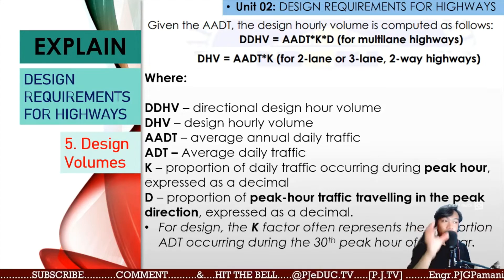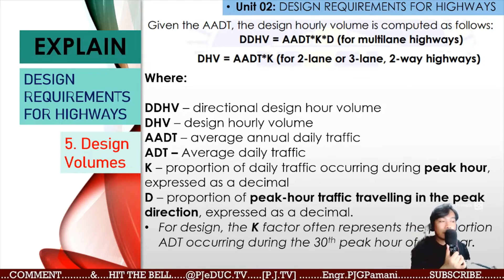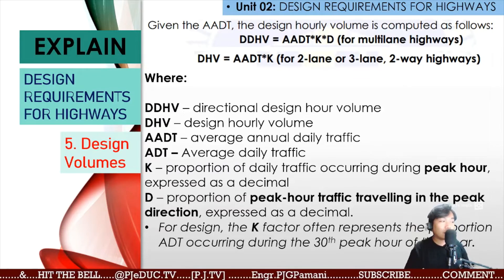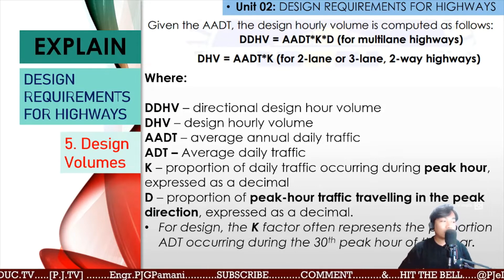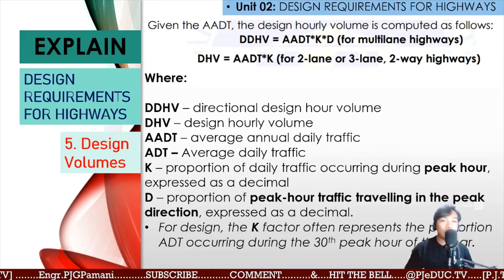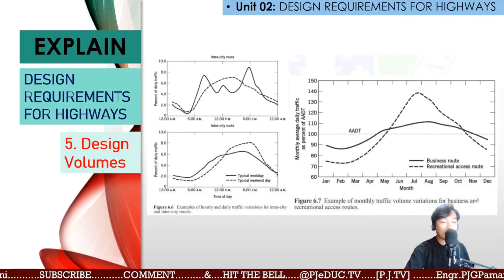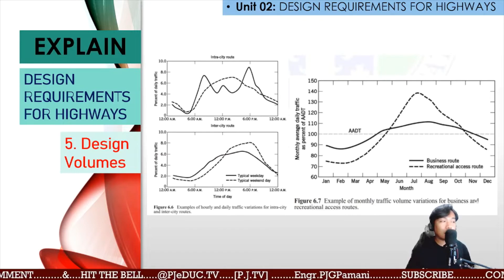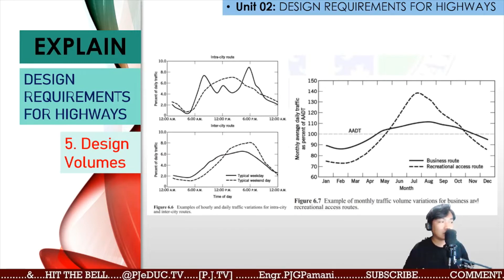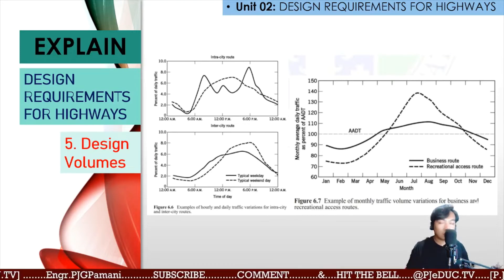The K factor, with consideration of flow direction, represents the proportion of average daily traffic occurring during the 30th peak hour of the year. Example data involving AADP, DHF, and DHV or DDHV are shown, including examples of monthly traffic volume variation for business and recreational access routes.